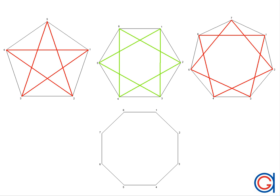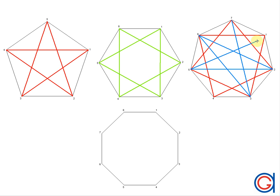So now in the same heptagon with a blue line we are going to draw an order 3 regular star polygon, skipping 2 vertices at a time. So to start we will join vertex 7 to vertex 3, 3 to 6, 6 to 2, 2 to 5, 5 to 1, 1 to 4, and then 4 to 7. And again you can see that you don't have to lift the pencil from the page.